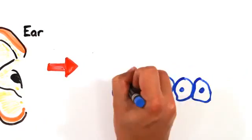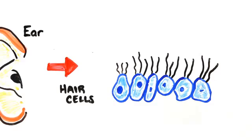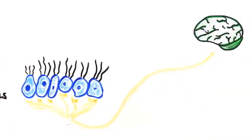In your ear, there are thousands of tiny nerve cells called hair cells. These are responsible for picking up different frequencies and sending the signal to the brain where it's processed.